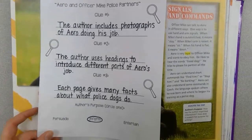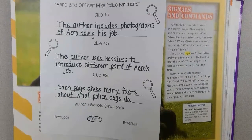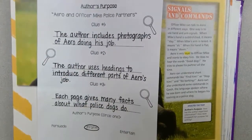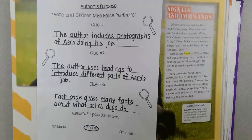But after looking at those three clues, our number one purpose would be to inform. Let's all circle 'inform.' The purpose of the author writing this story would be to give us more information about what police dogs do. You guys did a really good job following along. If you missed anything, pause the video and make sure you have all your clues written down. Make sure your name is at the top and go turn it in when you are finished.